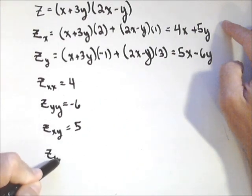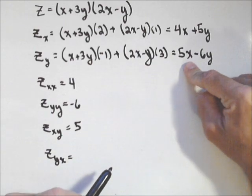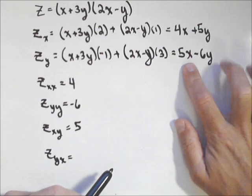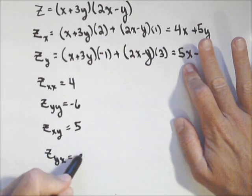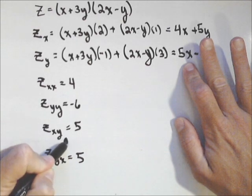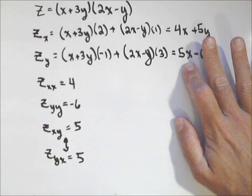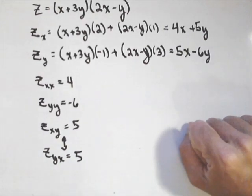Z sub yx. Derivative of z sub y with respect to x is 5. Once again, they're the same. Pretty cool. And so that's how we can calculate partial derivatives. Oops, sorry about that.